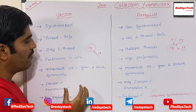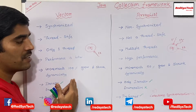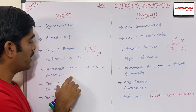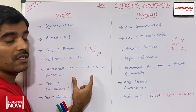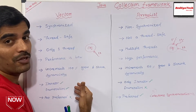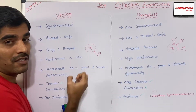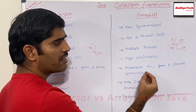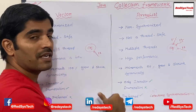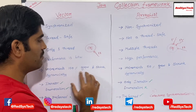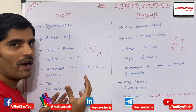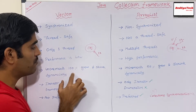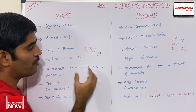Whenever the capacity limit gets reached, Vector actually increments 100% — it grows or shrinks 100% dynamically. But in terms of ArrayList, it actually increments 50% growth and also shrinks dynamically. So this is the difference between how they actually grow and shrink dynamically.